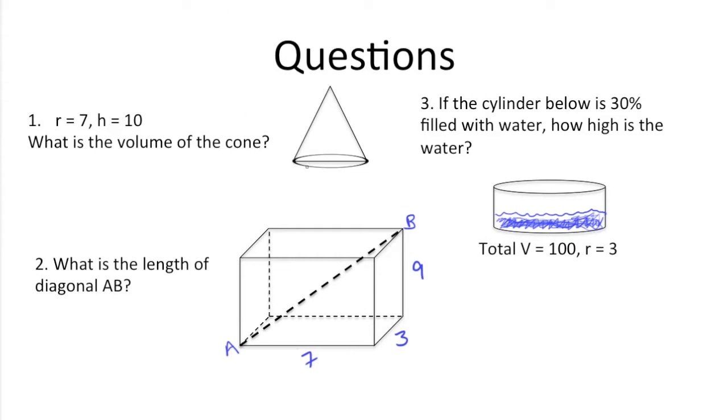Number one, what is the volume of the cone? We know the radius is seven and the height is ten. The formula for volume of a cone is one-third pi r squared h.